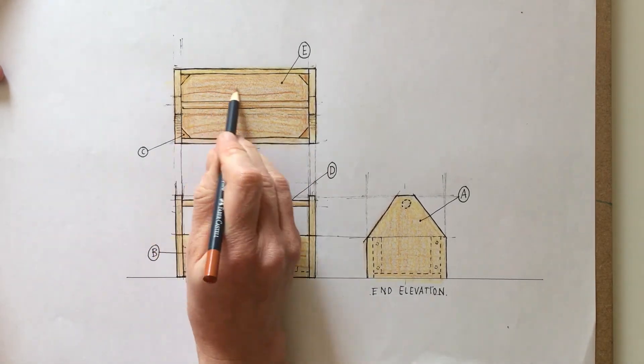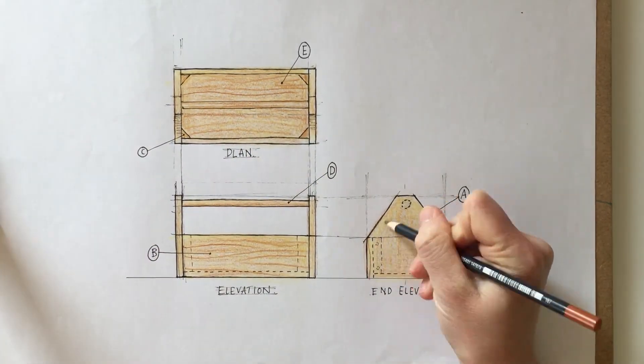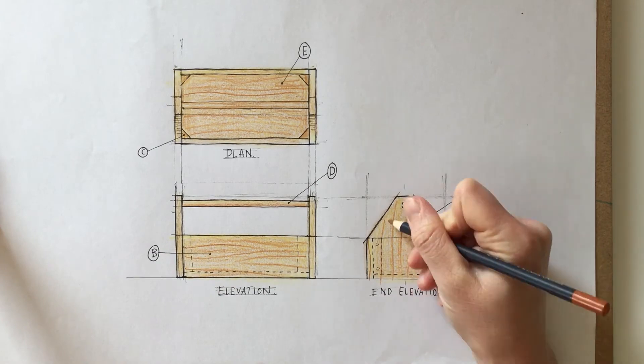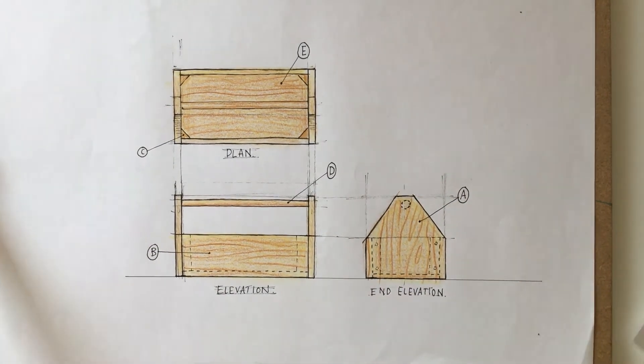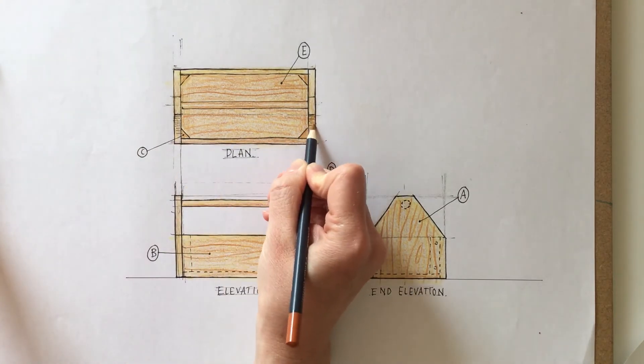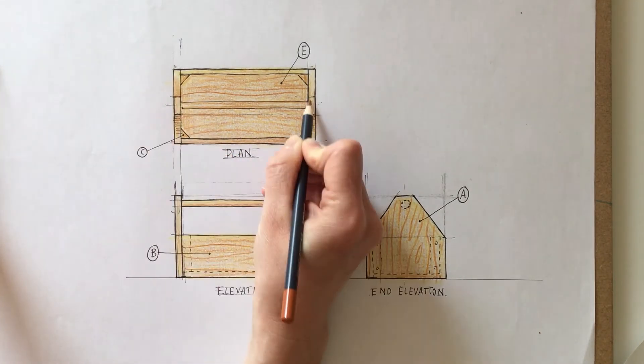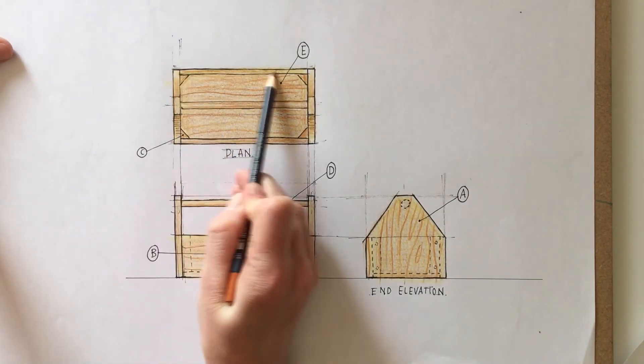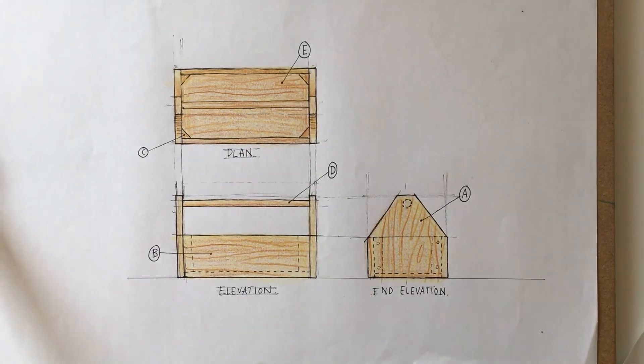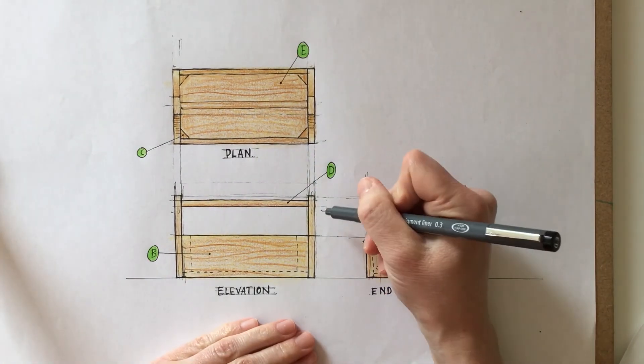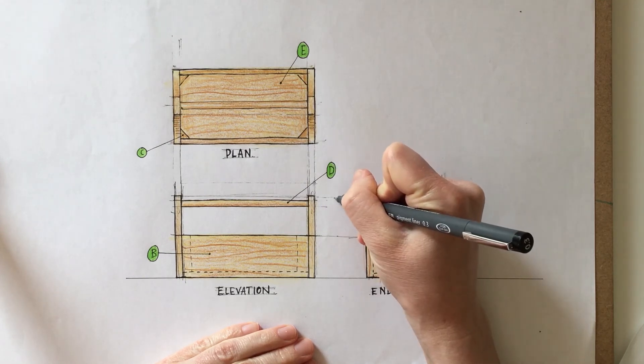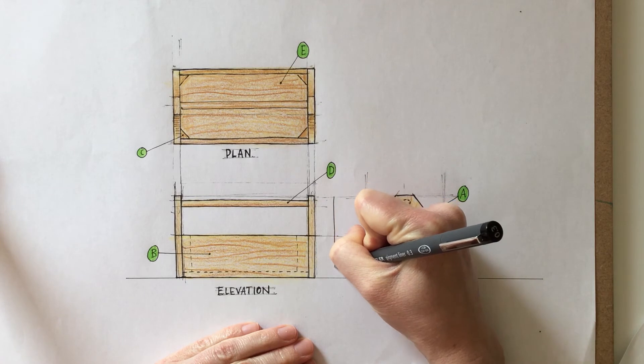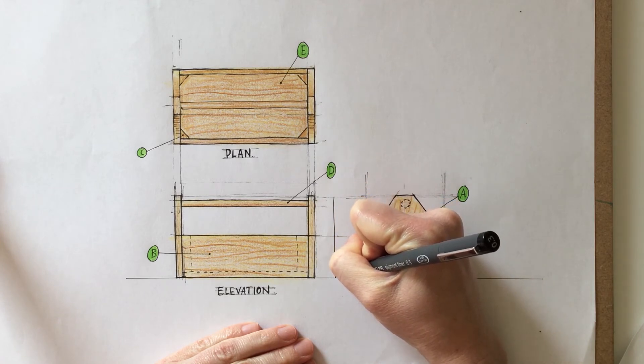I'm just finishing this off by using the end of the pencil to add a little bit of wood grain and to show some texture. Now what we're going to do is start adding some sizes in, and we're just going to put the main dimensions in that will help someone make this box. We're not going to overload it with too many different sizes.